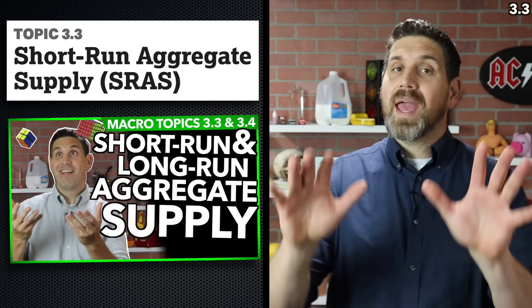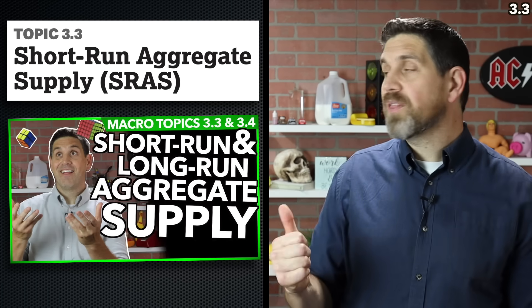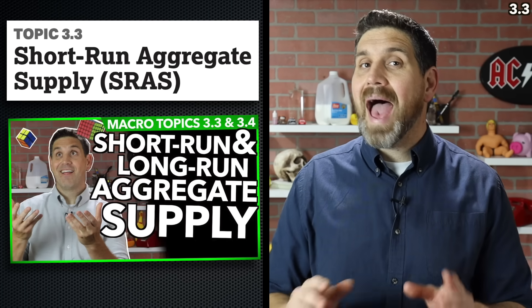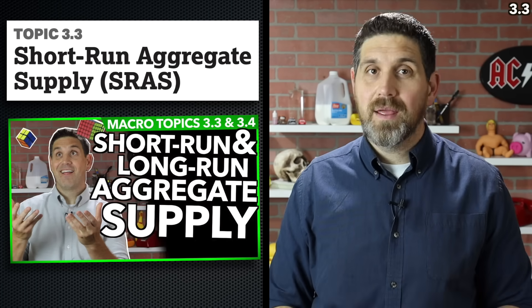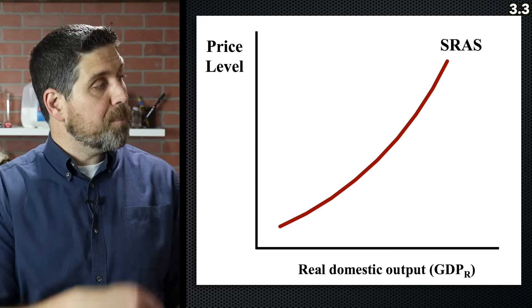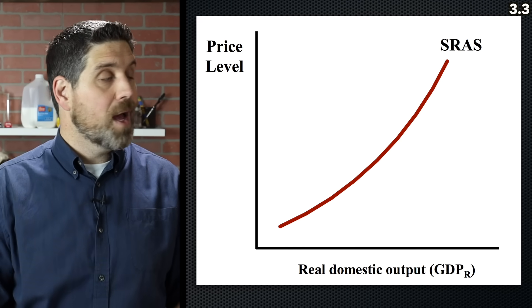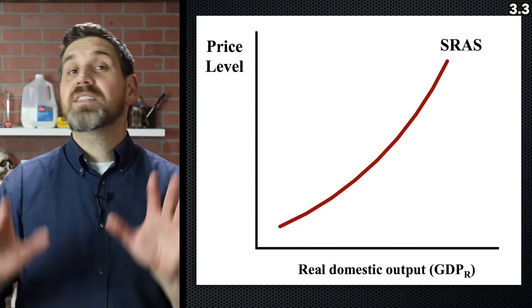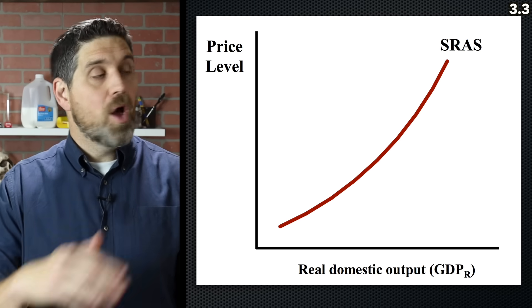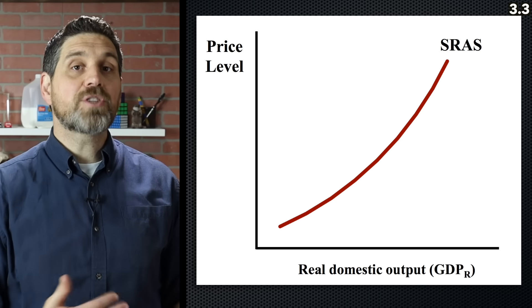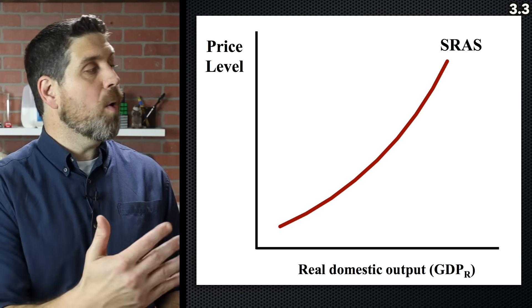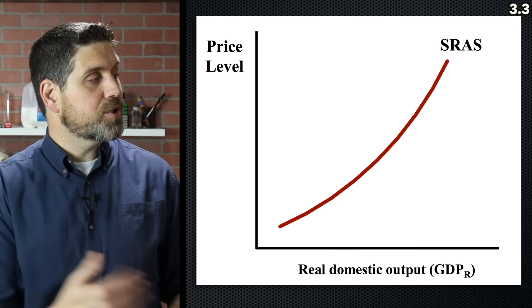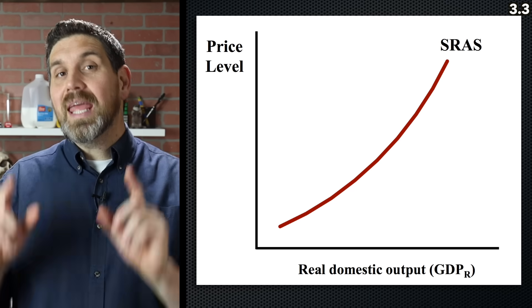Go back to the study guide and answer the six questions under topic 3.2. Now we're back to graphing. In 3.3, we're talking about the short-run aggregate supply. Just like a market supply curve, it's upward sloping, showing a direct relationship between price level and real GDP. This is the short-run aggregate supply — when price level goes up, producers have an incentive to produce more; when price level goes down, producers are going to produce less in the short run.